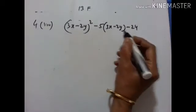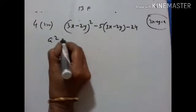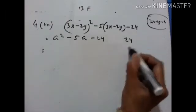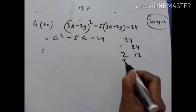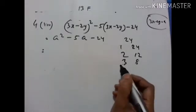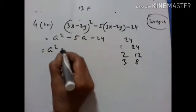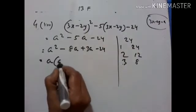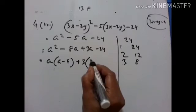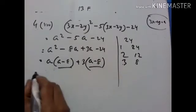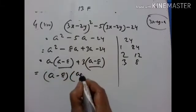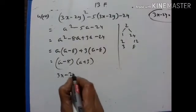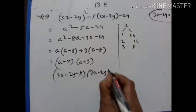Let 3X minus 2Y equal A. So we have A² minus 5A minus 24. Factor pairs: 1×24, 2×12, 3×8 — and 3 and 8 give us 5; minus 8 plus 3 gives us minus 5. So A² minus 8A plus 3A minus 24. A into A minus 8, plus 3 into A minus 8; A minus 8 is common. What remains is A plus 3. Substituting A with 3X minus 2Y, we get 3X minus 2Y minus 8 into 3X minus 2Y plus 3.